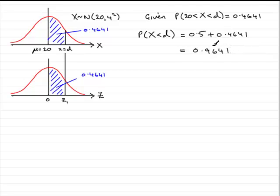Now that we know this probability, it therefore means that the probability that z is less than z1 is going to be exactly the same. Probability being less than z1 is all of this area here. So that too is going to be equal to 0.9641.